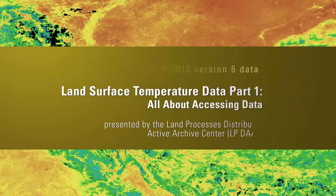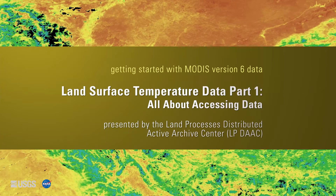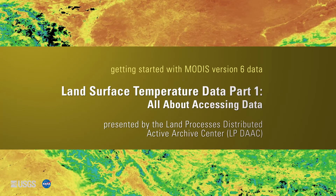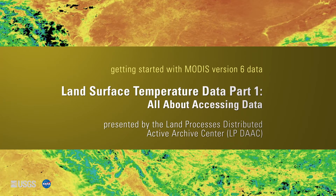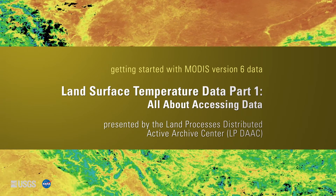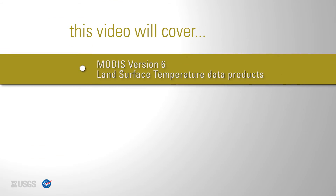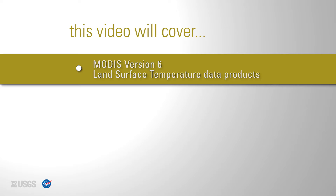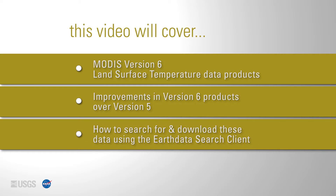Getting started with MODIS version 6 land surface temperature data, part 1: all about accessing data. Presented by the Land Processes Distributed Active Archive Center, or LP DAAC. This video is part 1 of the getting started with MODIS version 6 land surface temperature data video series. This video will cover the land surface temperature data products, improvements in version 6 products over version 5 products, and how to search for and download these data using the Earth Data Search client data access tool.